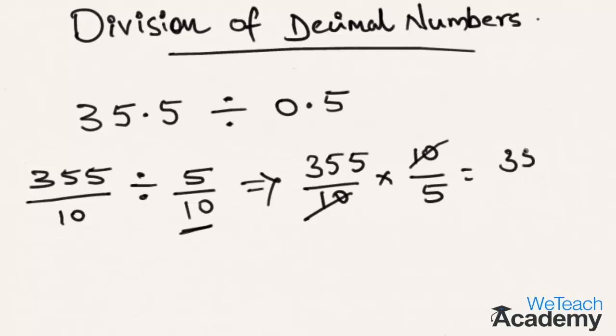We get 355 by 5, which is nothing but 5 times 71 equals 355. Hence, 355 by 5 is 71. Therefore, the result of 35.5 divided by 0.5 is 71.